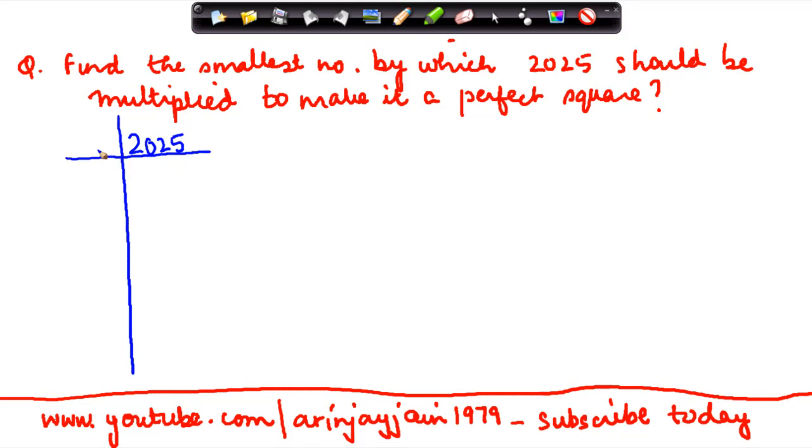Let us see what are the prime factors of this number, and we have been told what is the number by which it should be multiplied to make it a perfect square. So the first step here is to find out the prime factors because that will tell us whether this is a perfect square or not.